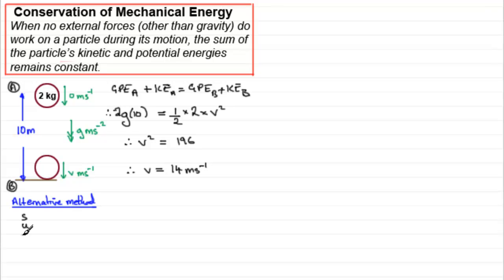So S, remember, is displacement, U initial velocity, V the final velocity, A the acceleration, and T the time. S is displacement, so we need to set up a positive direction. Let's have downwards as being positive. So the displacement would be 10, 10 meters. U, the initial velocity, would be 0, 0 meters per second. The final velocity, well that's what we're trying to find. Acceleration due to gravity is G, or 9.8 meters per second per second. And T, we don't know how long it took to drop from here to here. So we don't know that result. We'll just mark it with a cross there.